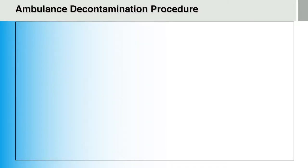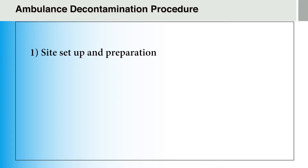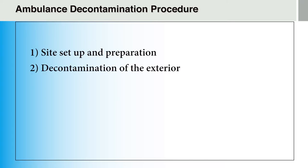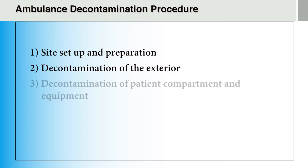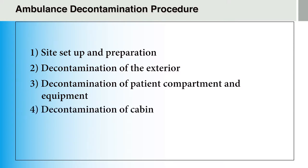Now let's begin with the ambulance decontamination procedure. There are four main steps for ambulance decontamination. First, site setup and preparation. Second, decontaminate the ambulance exterior. Third, decontaminate the patient compartment and equipment. And fourth, decontaminate the driver cabin.